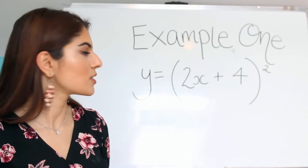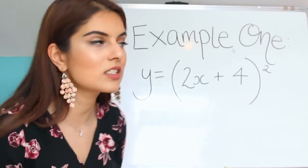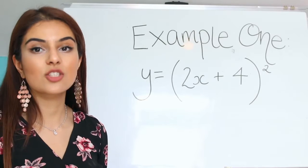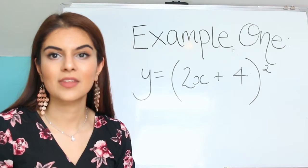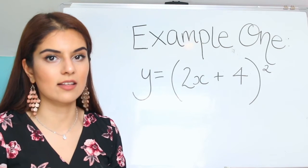So what we have to do is we have to differentiate y equals 2x plus 4 squared. And if we did this normally, it's doable but it would take a while. So now all we need to do with this is separate it into outer layer and inner layer.